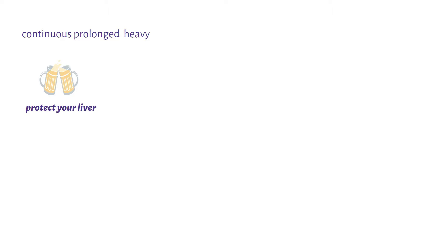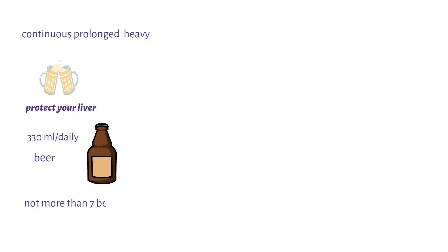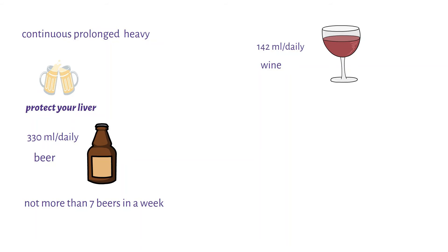You can protect your liver through consumption of the recommended alcohol quantities. This includes not more than 330 ml of regular beer, equivalent to one beer, or not more than seven beers in a week. No more than 142 ml of wine, which translates to one standard glass of wine, and not more than 37 ml of spirits daily.